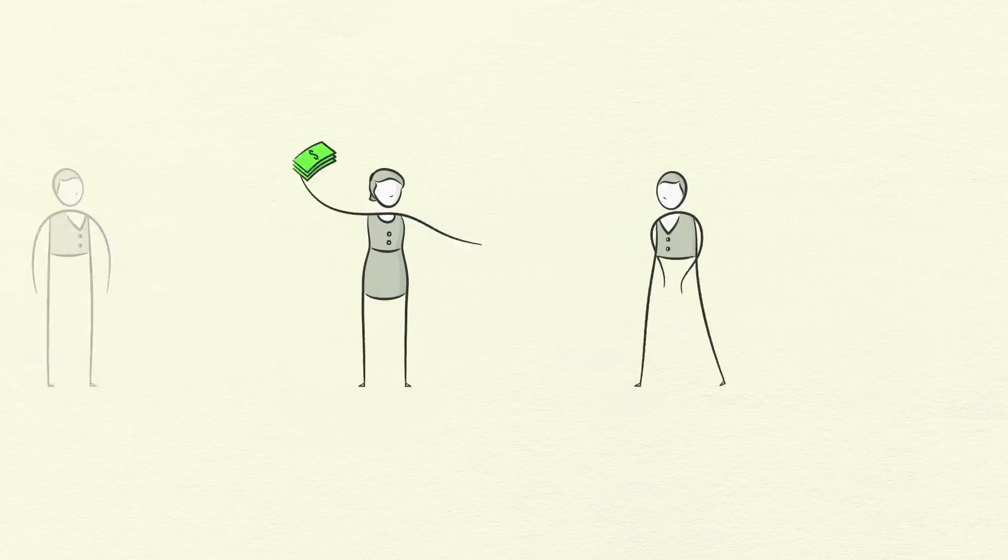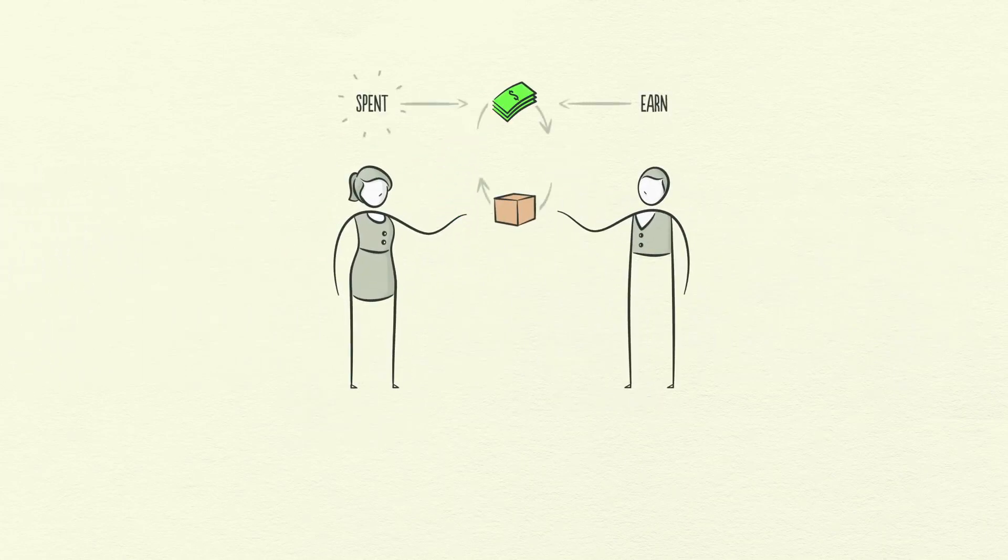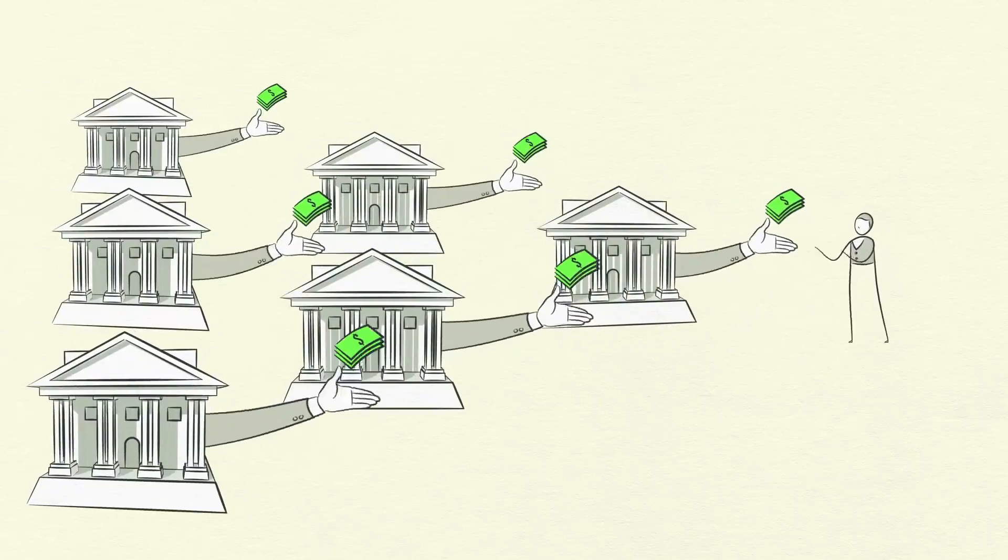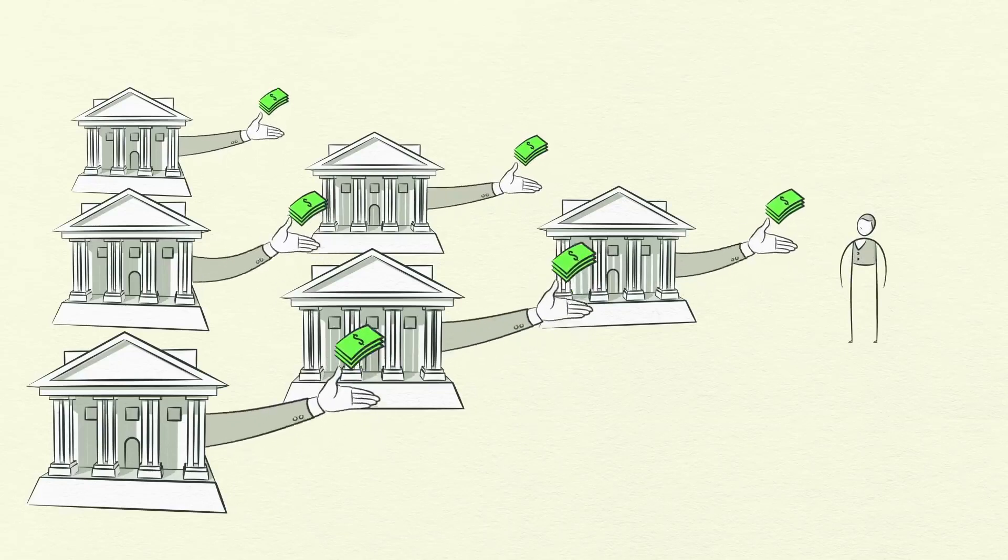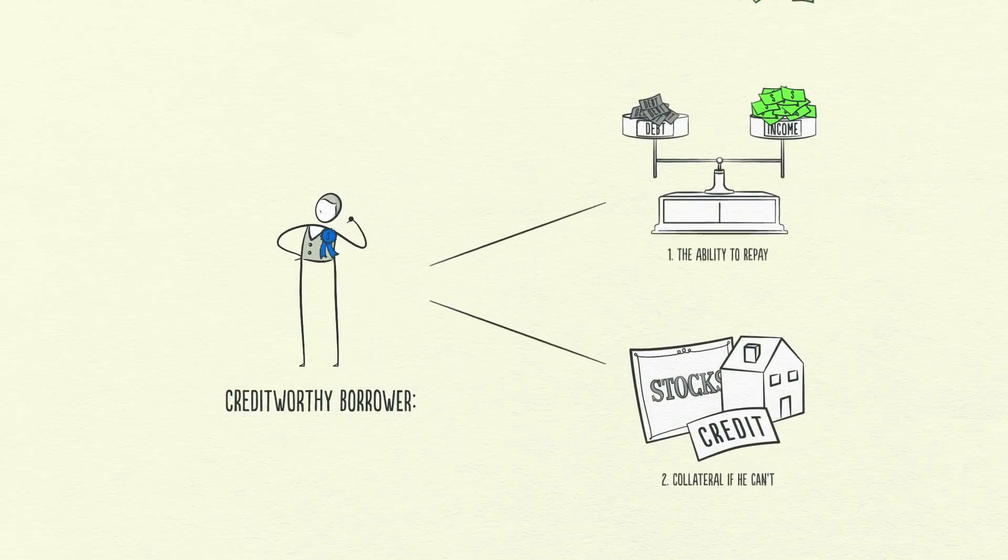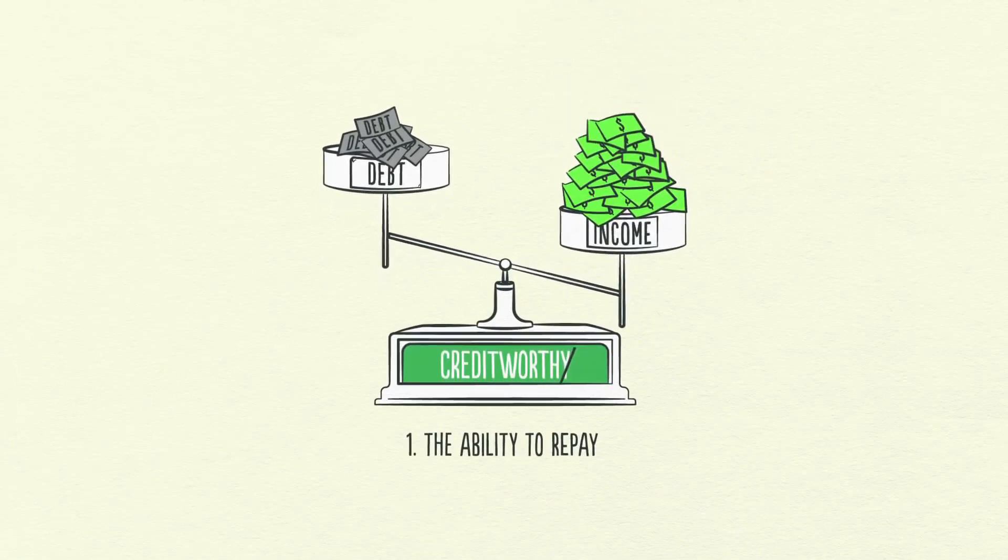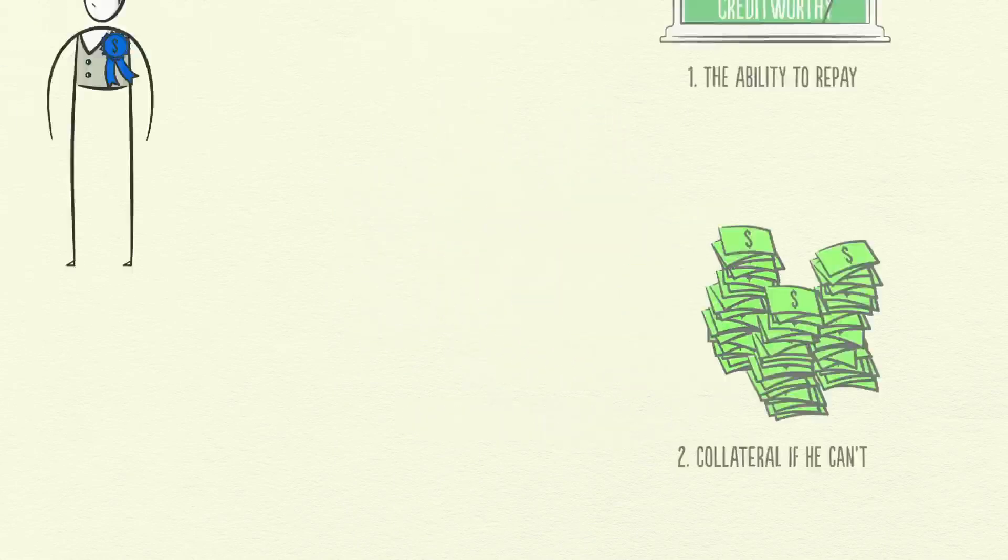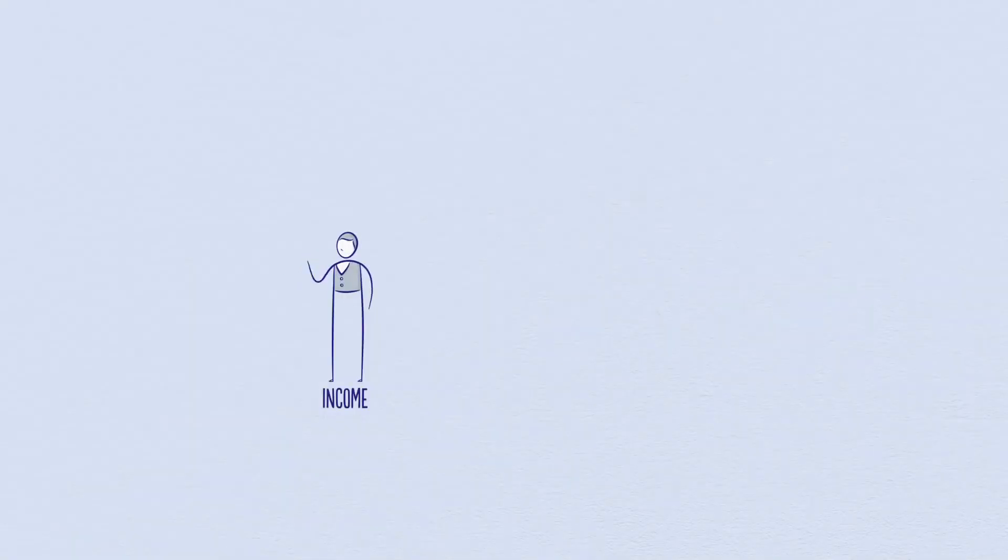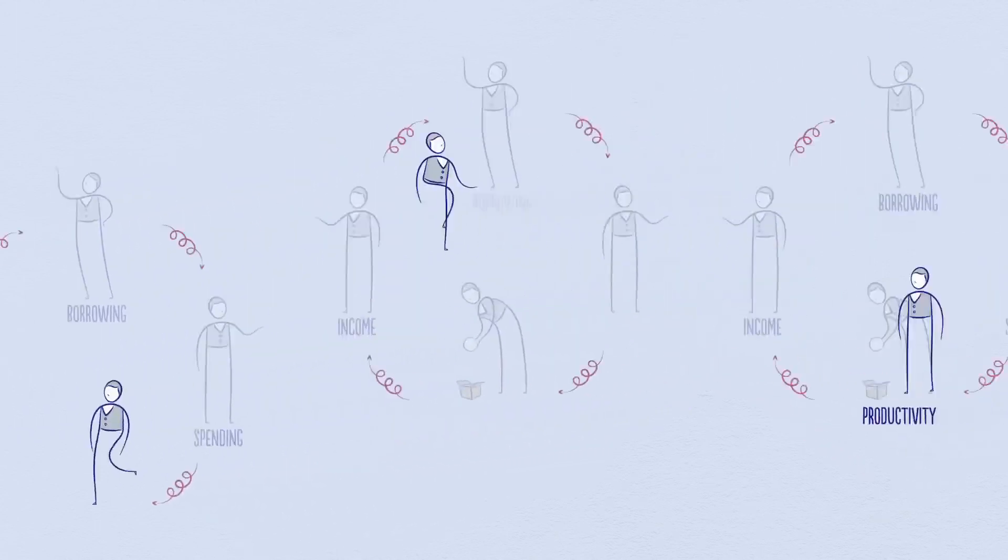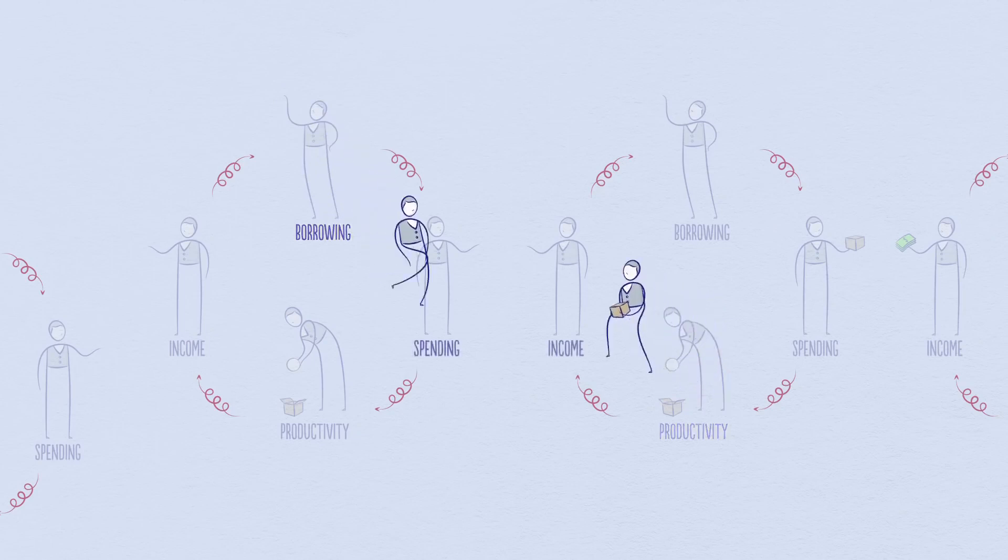This is because one person's spending is another person's income. Think about it. Every dollar you spend, someone else earns. And every dollar you earn, someone else has spent. So when you spend more, someone else earns more. When someone's income rises, it makes lenders more willing to lend him money because now he's more worthy of credit. A creditworthy borrower has two things: the ability to repay and collateral. So increased income allows increased borrowing, which allows increased spending. And since one person's spending is another person's income, this leads to more increased borrowing and so on. This self-reinforcing pattern leads to economic growth and is why we have cycles.